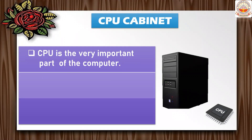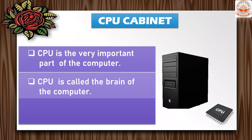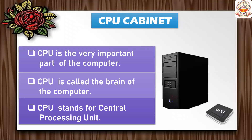Without the CPU cabinet the computer will not work. A CPU cabinet is a box which contains the CPU. CPU stands for Central Processing Unit — C for Central, P for Processing, and U for Unit. The CPU works like the brain of the computer, and that is why it is called the brain of the computer.